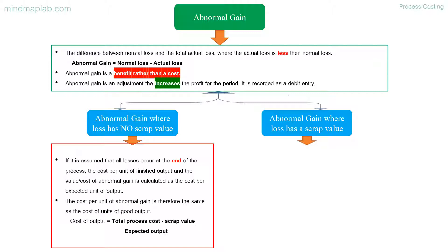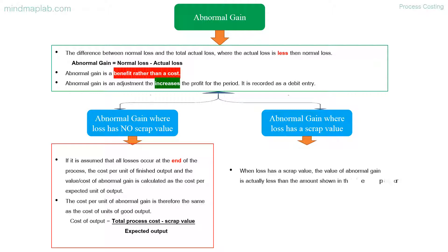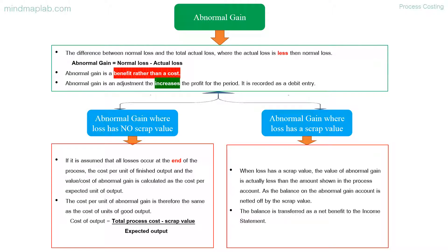Abnormal gain where loss has a scrap value: when loss has a scrap value, the value of abnormal gain is actually less than the amount shown in the process account, as the balance on the abnormal gain account is netted off by the scrap value. The net balance is transferred as a net benefit to the income statement.